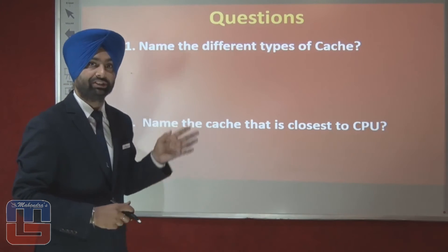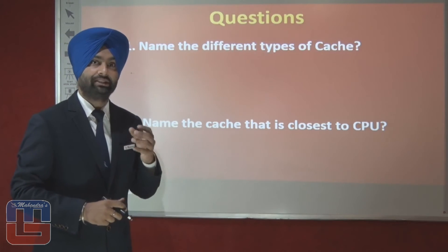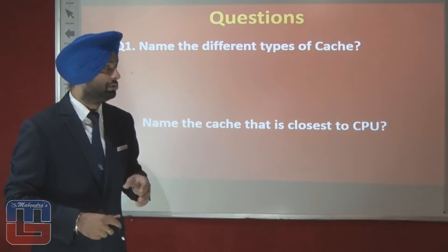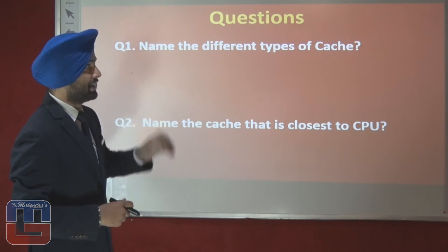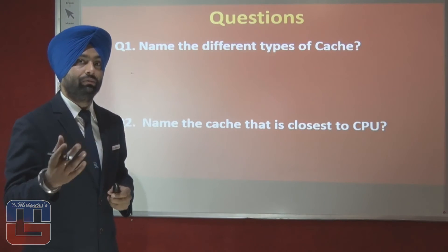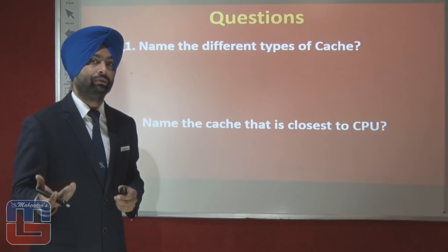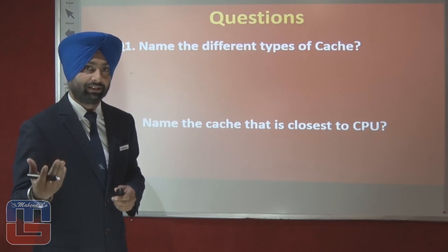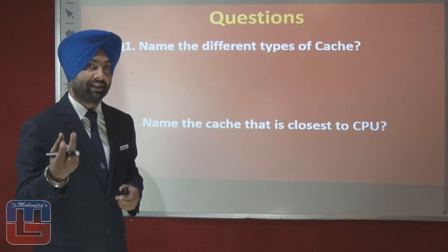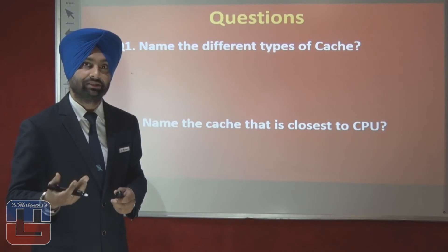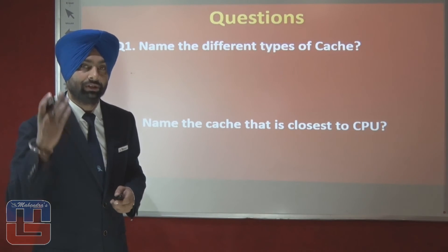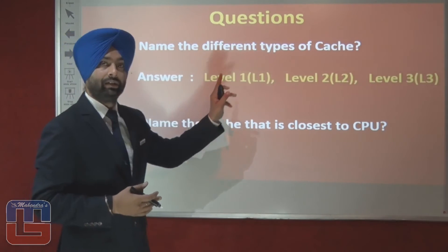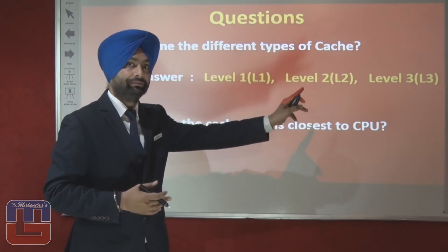Now we have a few questions. Name the different types of cache — we know: L1, L2, and L3. What does the 'L' stand for? It stands for 'Level' — Level 1, Level 2, and Level 3.